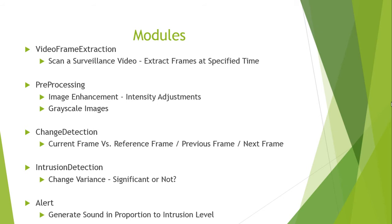Now that I have preprocessed images, I perform change detection. I use the current frame and compare it with a reference frame — the first extracted frame — assuming it as the stable background. Any different frame after that is treated as a potential intrusion. I also compare with the previous and next frames. Once I have the change parameters, I calculate the variance of the change. The more the variance, the more the significance. If it's a significant change, I generate an alert — basically a sound proportional to the intrusion level.